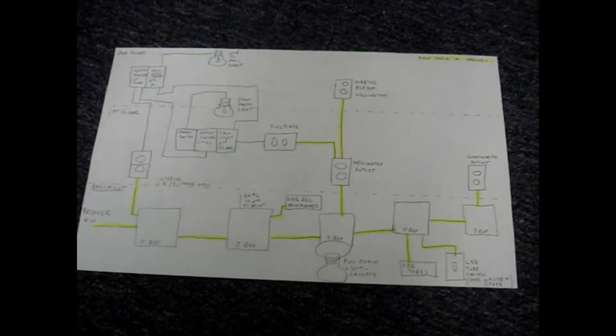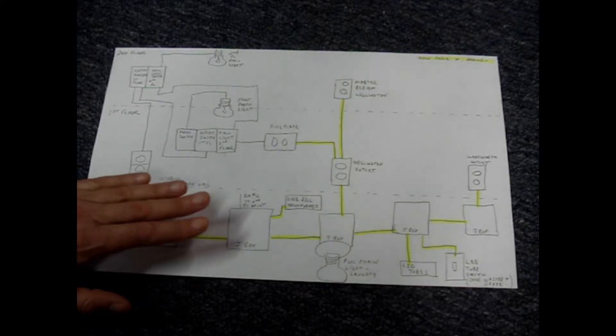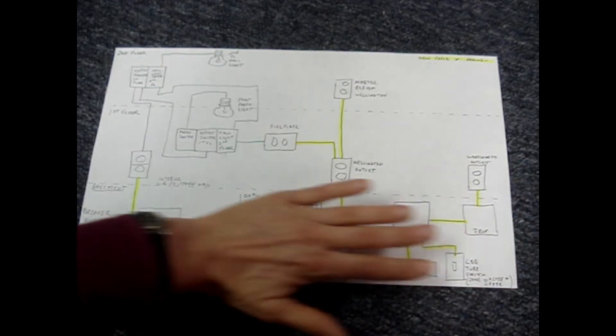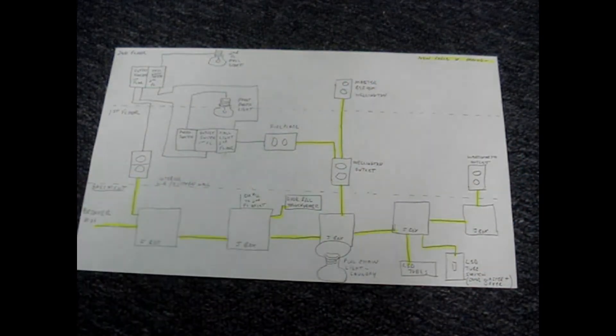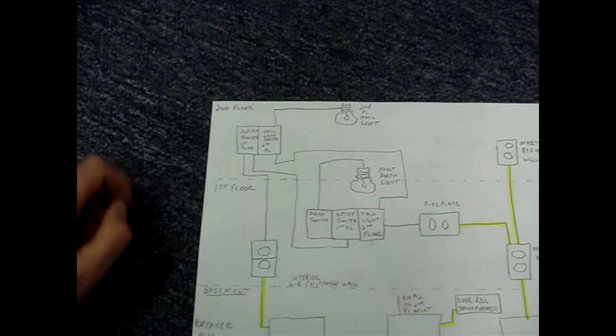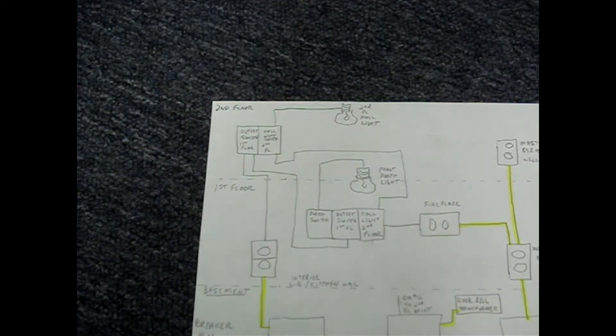I have everything that's connected to breaker number 11 drawn out and have replaced the cabling with ground to this section. For this video, I'll focus on the section that contains the three-way switches and the shared neutral.